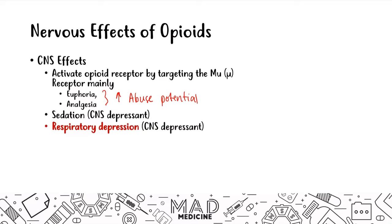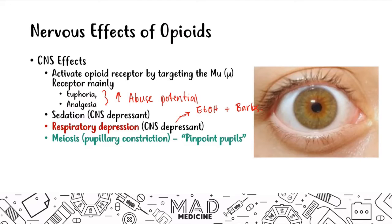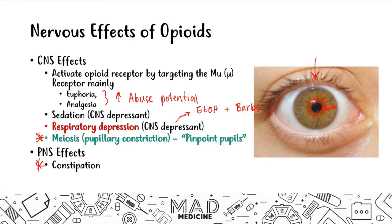Sedation can dangerously lead to respiratory depression. In the CNS depressant category, alcohol and barbiturates can also lead to respiratory depression, but benzodiazepines very rarely do — that's an important differentiating factor. Another CNS effect is miosis, also known as pupillary constriction or pinpoint pupils — a side effect that does not develop tolerance with continuous opioid use. On the peripheral nervous system side, patients will have constipation and skin warmth and flushing.